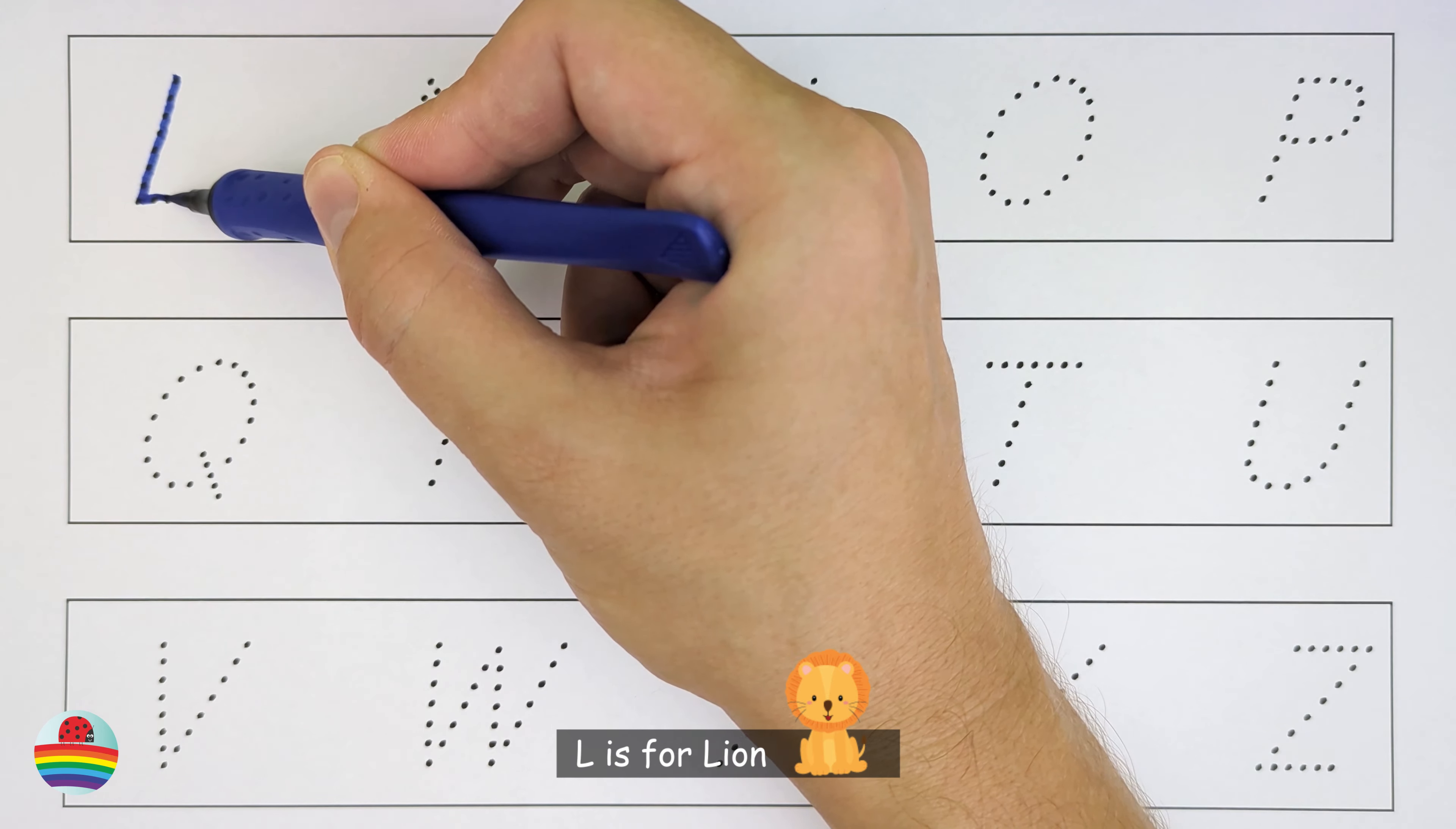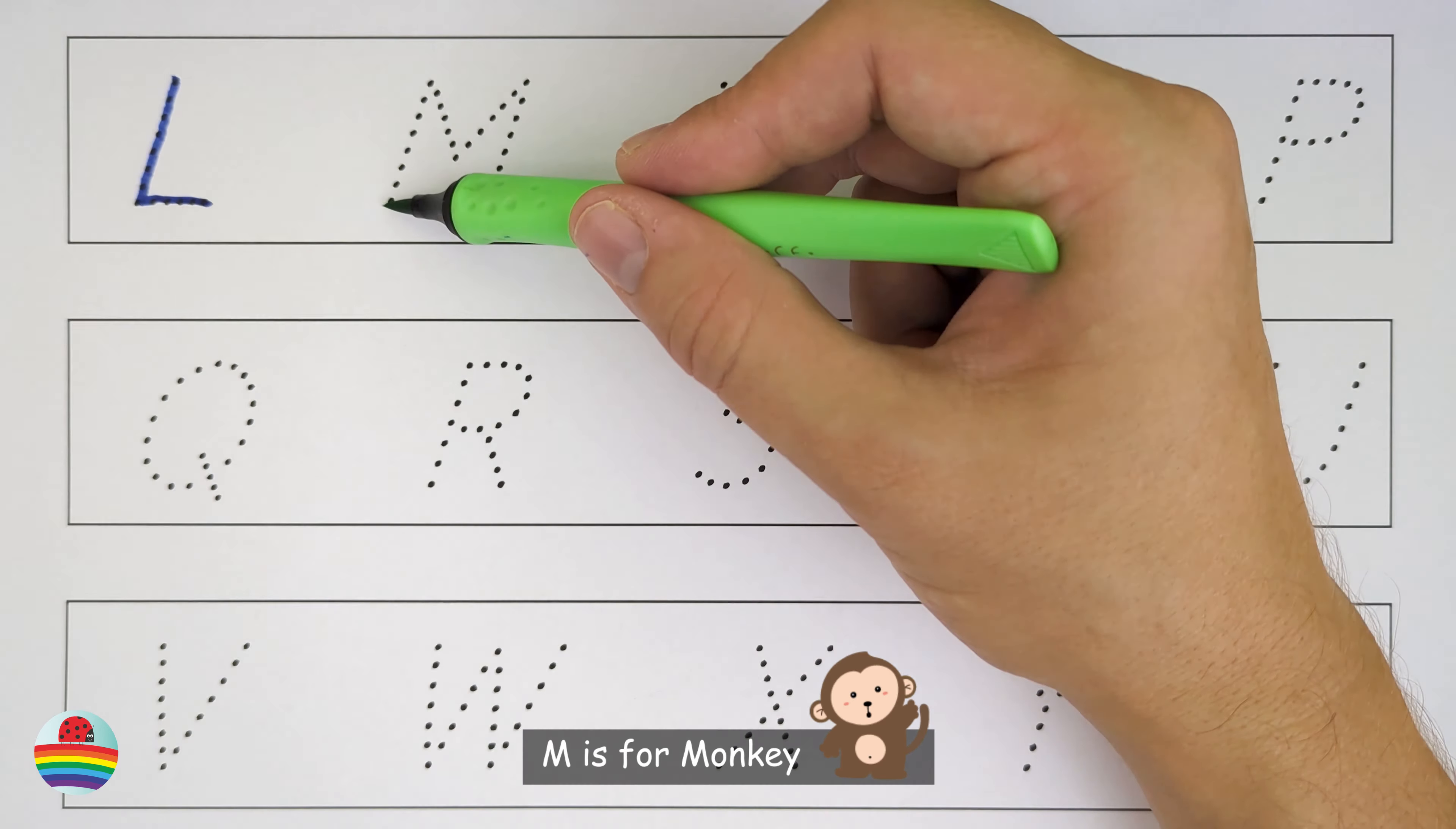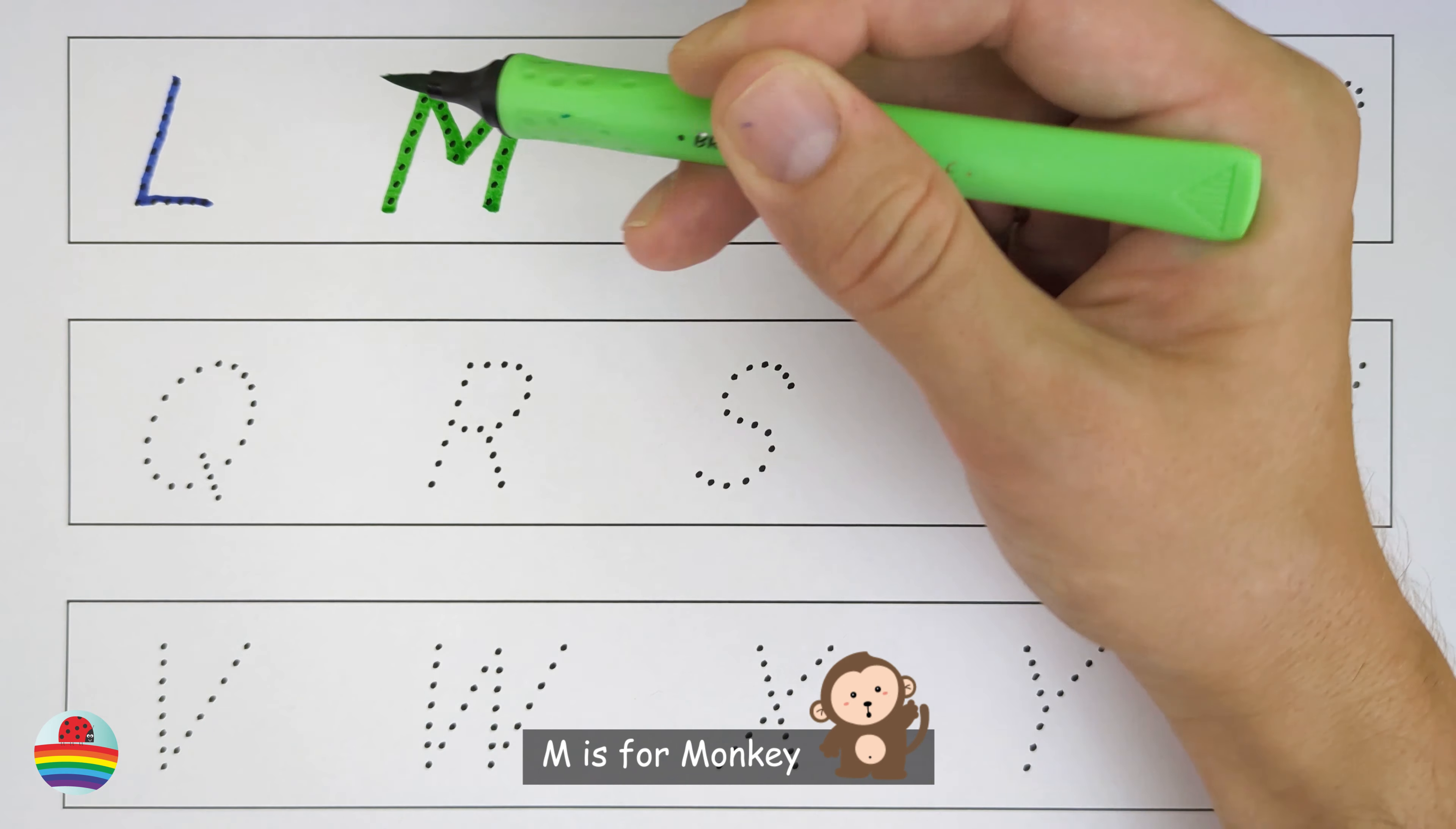L. L is for lion. L. M. M is for monkey. M.